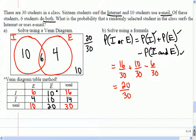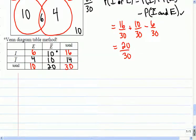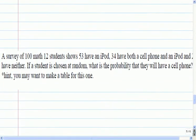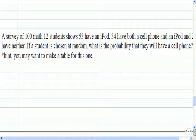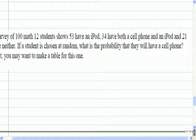So try this one out. You can use the Venn diagram. You can use the table method. But I think you'll find it quite challenging to use a formula. 100 Math 12 students are surveyed. 53 have an iPod. 34 have a cell phone. And 21 have neither. If a student is chosen at random, what is the probability they will have a cell phone?